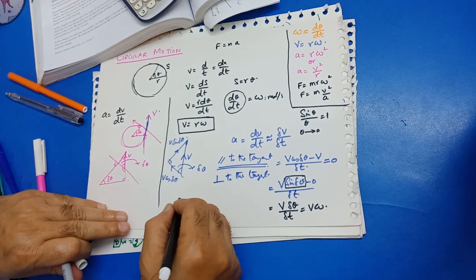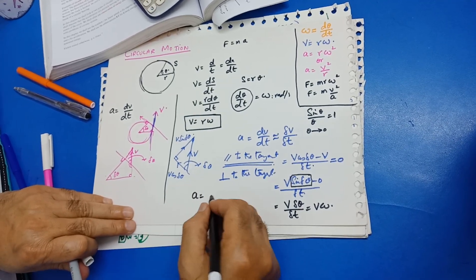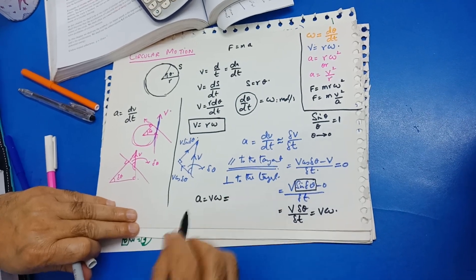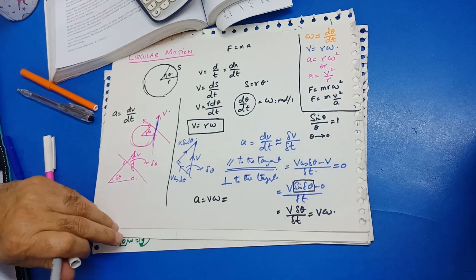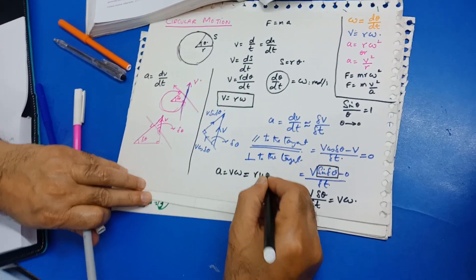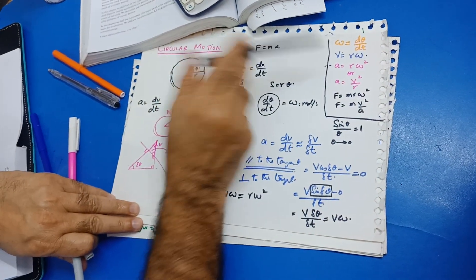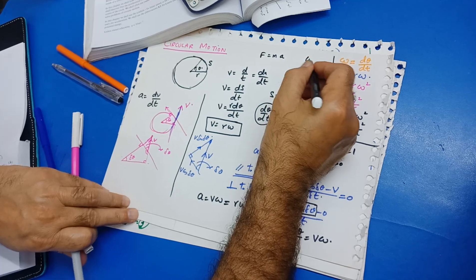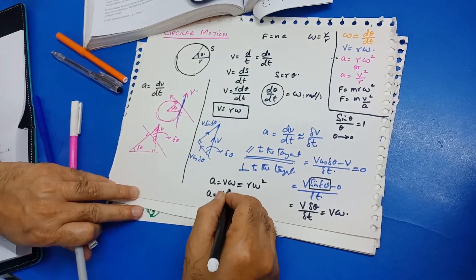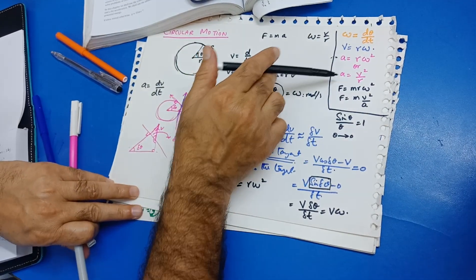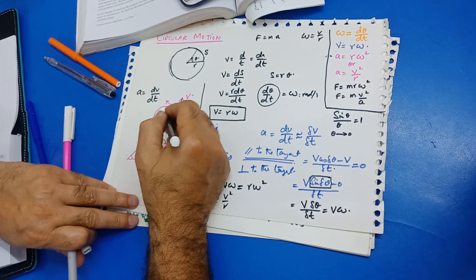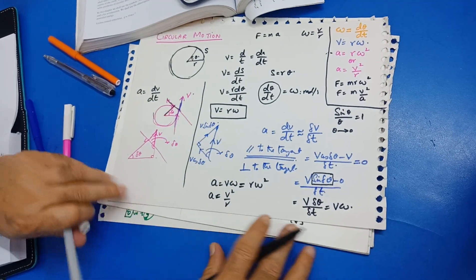So the acceleration perpendicular to the tangent — directed toward the center — is vω. Substituting v = rω gives a = rω², and substituting ω = v/r gives a = v²/r. These are the two standard forms of centripetal acceleration, and both are perpendicular to the direction of the velocity.